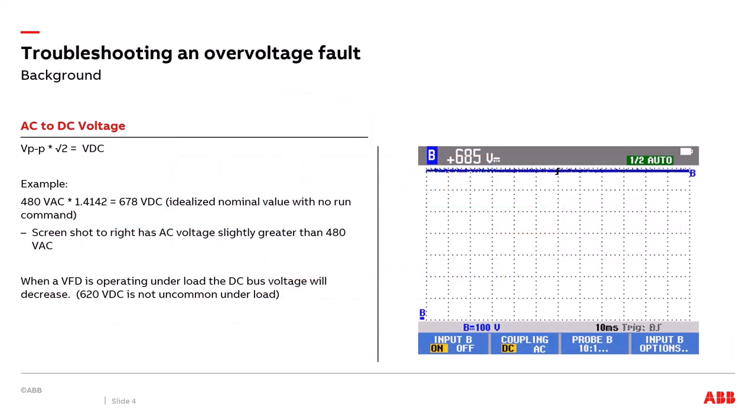There are two types of voltage: AC voltage from the utility, and the rectified DC bus voltage stored across the DC bus capacitors. The relationship is: take the phase-to-phase voltage and multiply by the square root of two to get DC bus voltage. For example, 480 volts phase-to-phase times 1.414 equals approximately 670 volts DC. This is the idealized voltage you'd see on a multimeter or the drive's control panel when the drive is not running the motor. When the VFD runs its motor under normal loading, the bus voltage can drop as low as 620 volts DC — this is not an issue.